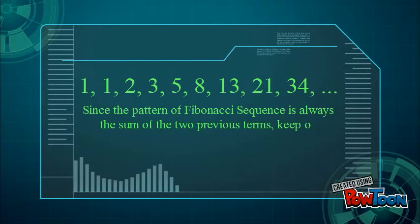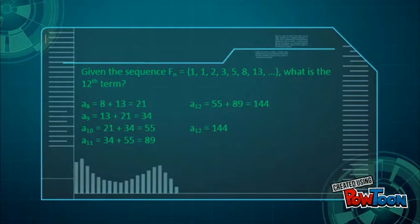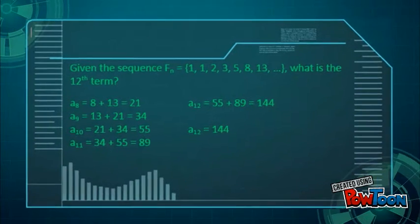Given that fₙ = 1, 1, 2, 3, 5, 8, and so on, what is the 12th term? a₈ = 8 + 13 = 21, a₉ = 13 + 21 = 34. Continuing the pattern, a₁₂ = 144.